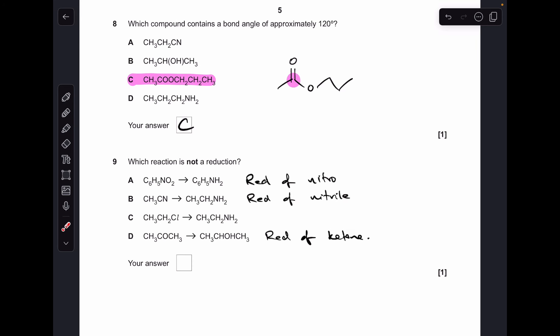Number nine, which is not a reduction. So it's testing our knowledge of reaction types. A is the reduction of a nitro group. This NO2 group has been reduced to the NH2 group. B is the reduction of the nitrile group to an amine group. And D is the reduction of a ketone to a secondary alcohol. So C wasn't a reduction reaction. That's just the substitution of a halogen for an amine group.